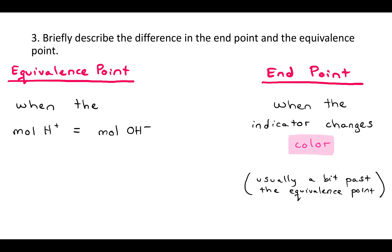The problem, of course, is that that is usually clear, so it's hard to identify when that happens. The end point is when the indicator changes color, and that's usually just a little bit past the equivalence point. Phenolphthalein, for example, doesn't turn pink until the solution becomes slightly basic. But at that point, you've added just a little bit more moles of OH minus than you had of H plus. Remember that OH minus is a base and H plus is an acid. The equivalence point is when the moles of H plus and OH minus actually equal each other. And the end point is when the indicator changes color.